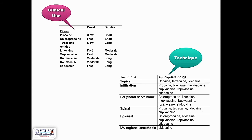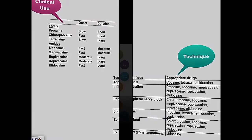For infiltration anesthesia, procaine and lidocaine are preferred. For peripheral nerve block, chloroprocaine, lidocaine, and mepivacaine are preferred. For spinal anesthesia, procaine, tetracaine, and lidocaine are preferred. For epidural anesthesia, lidocaine and bupivacaine are preferred. For IV regional anesthesia, lidocaine is the preferred agent.